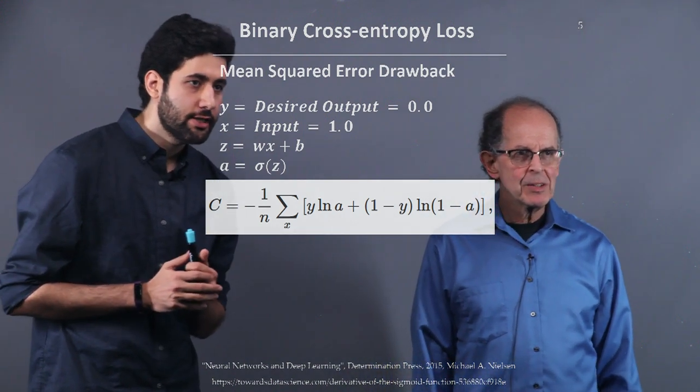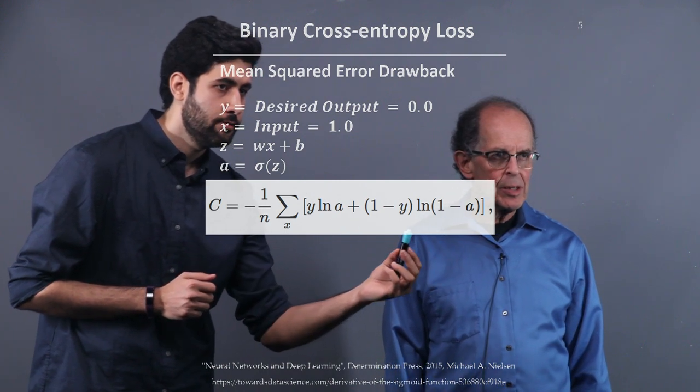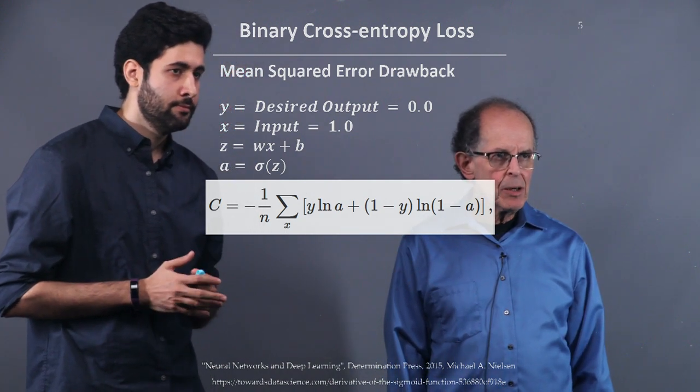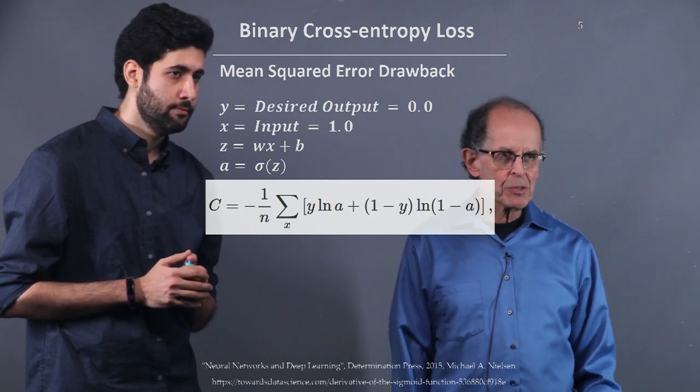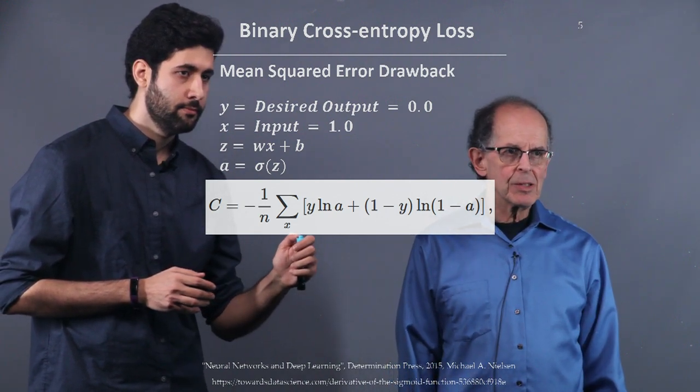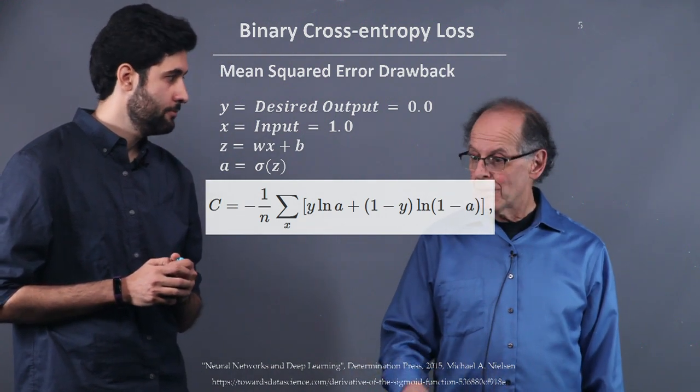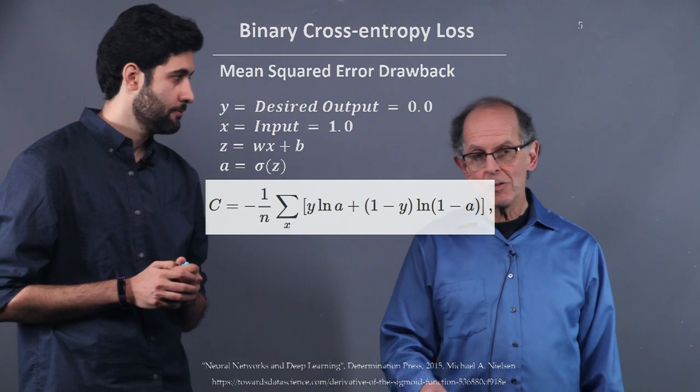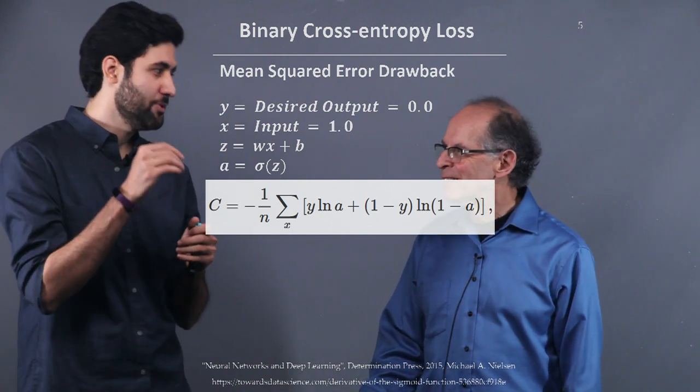The other side is also easy. If Y is 1, this part cancels out. So, if Y is 1, 1 minus Y is 0, so that part goes away. And Y is 1. And then log A, if A is 1, or near 1, then that's near 0. So, 1 times 0, 0, and the cost function is minimized. Is minimized, exactly.